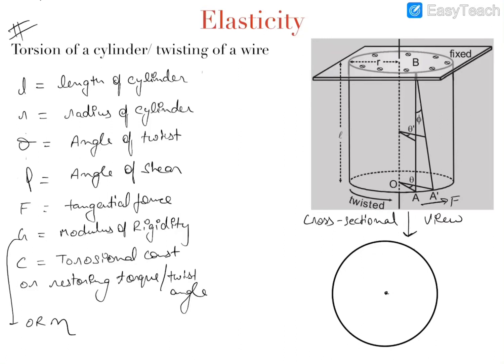Welcome to Tesla Adventures. In this video we'll discuss the torsional rigidity of a wire. We'll consider a wire which is fixed on the roof and hanging from it. Its length is l and its radius is r — this is the cross-sectional view of the wire.